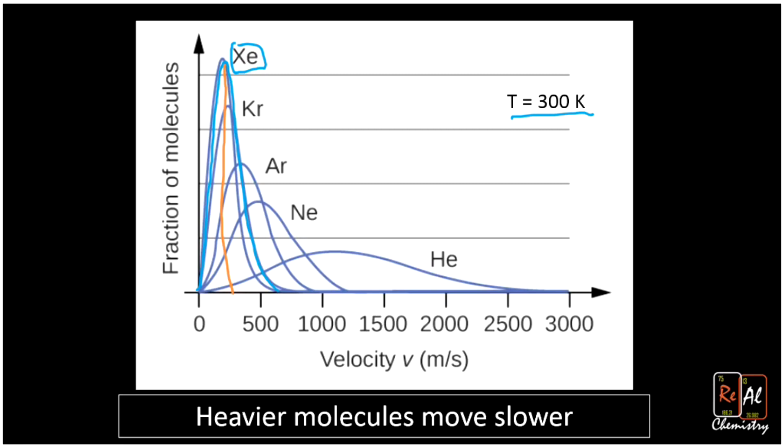Krypton's lighter than that. Argon's lighter still, and neon's lighter. Helium is the lightest of these gases at just about four grams per mole. Helium has the highest average speed at about 1250 meters per second. The lighter molecules move faster. The heavy molecules move slower at a given temperature.